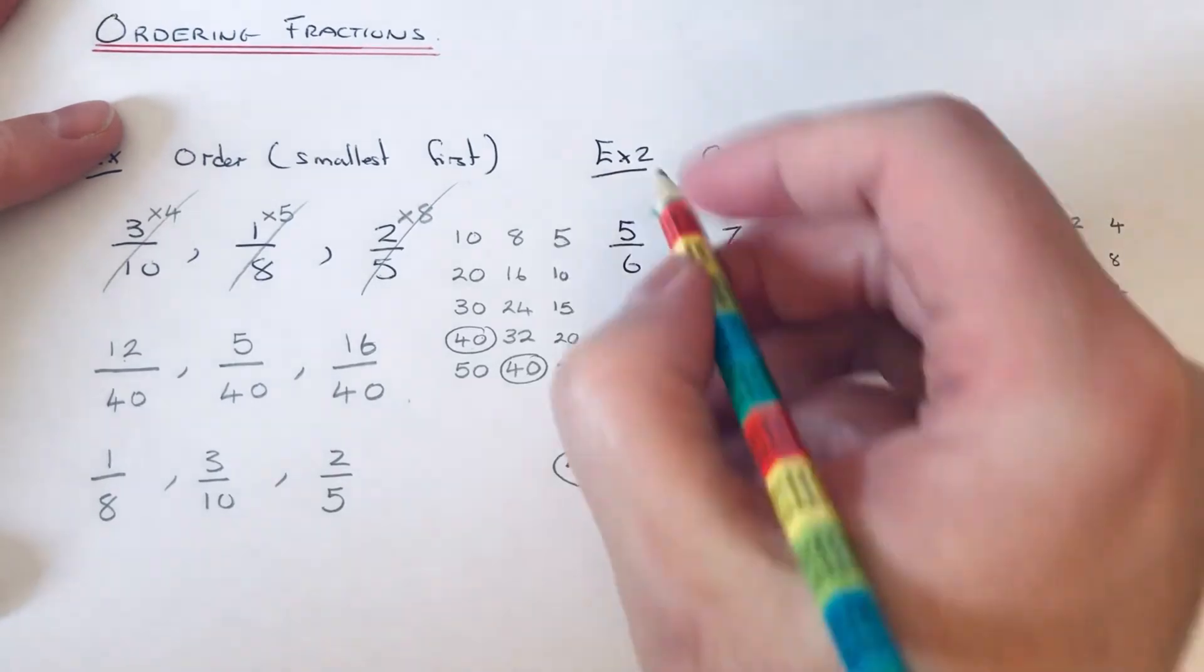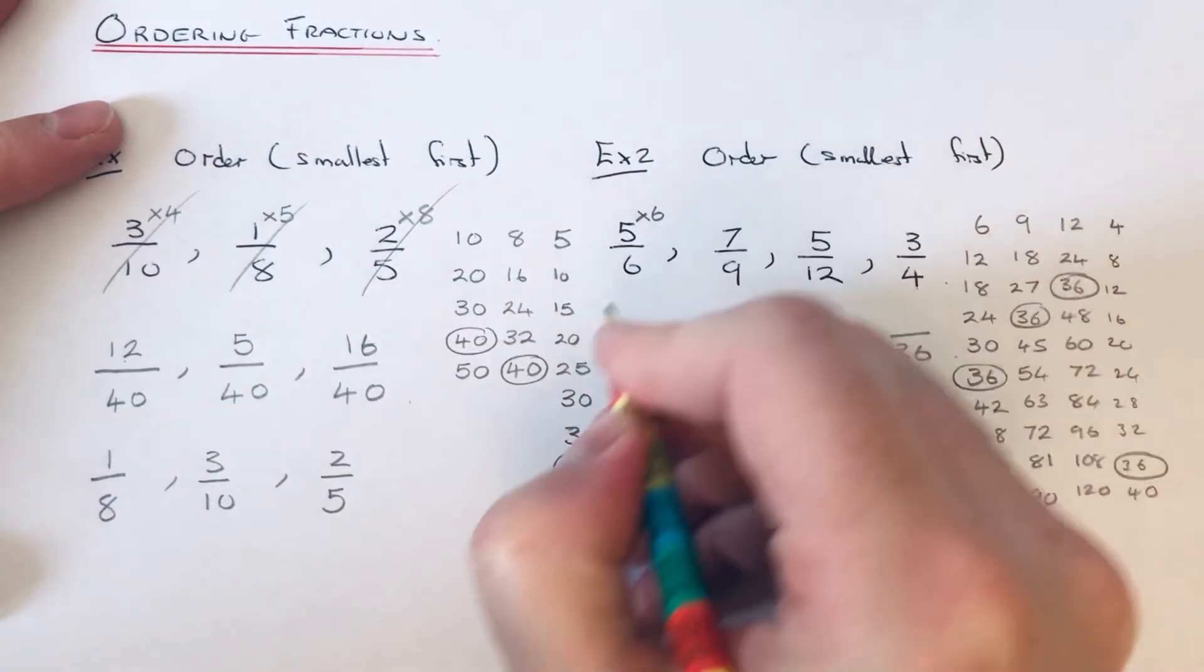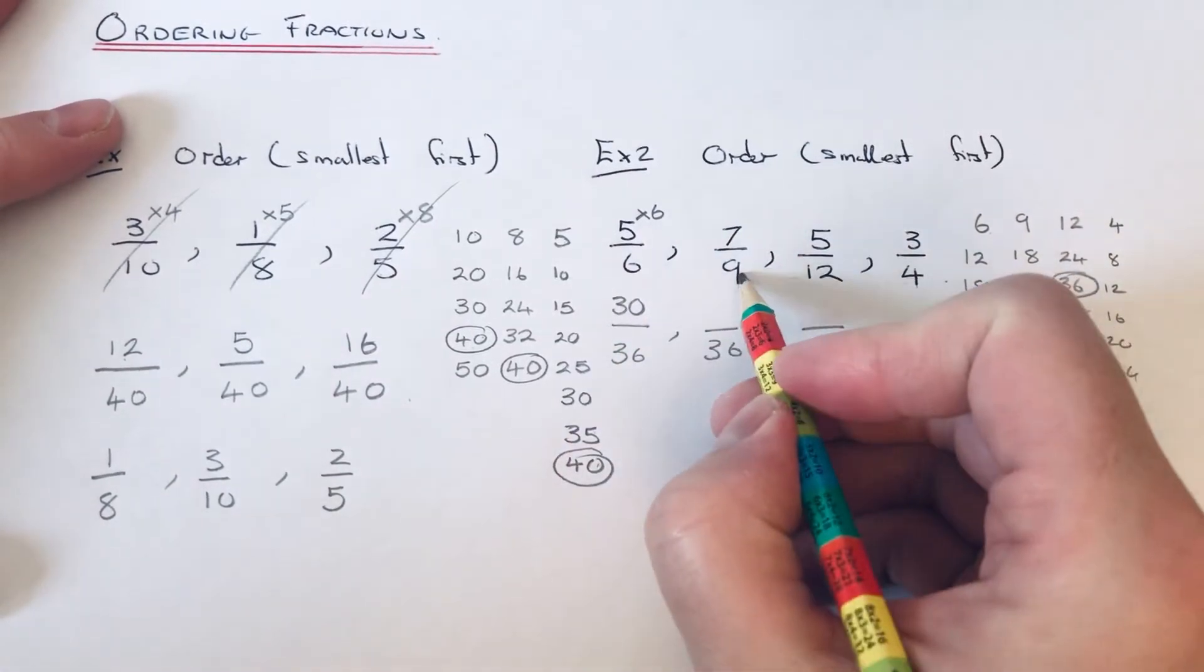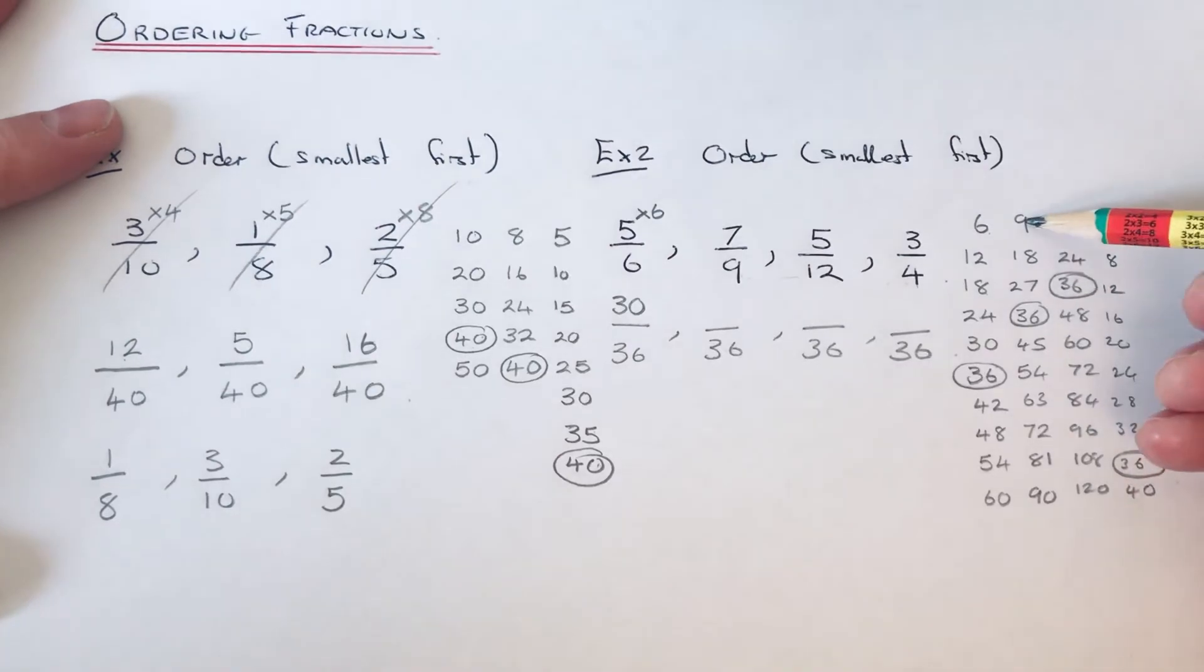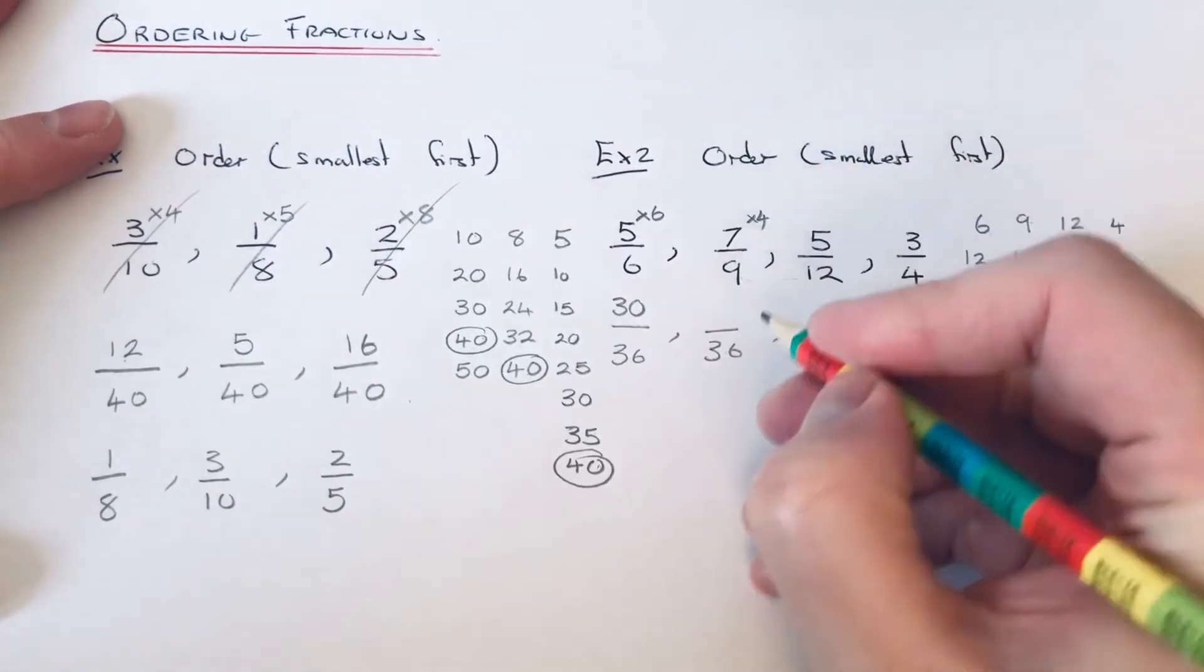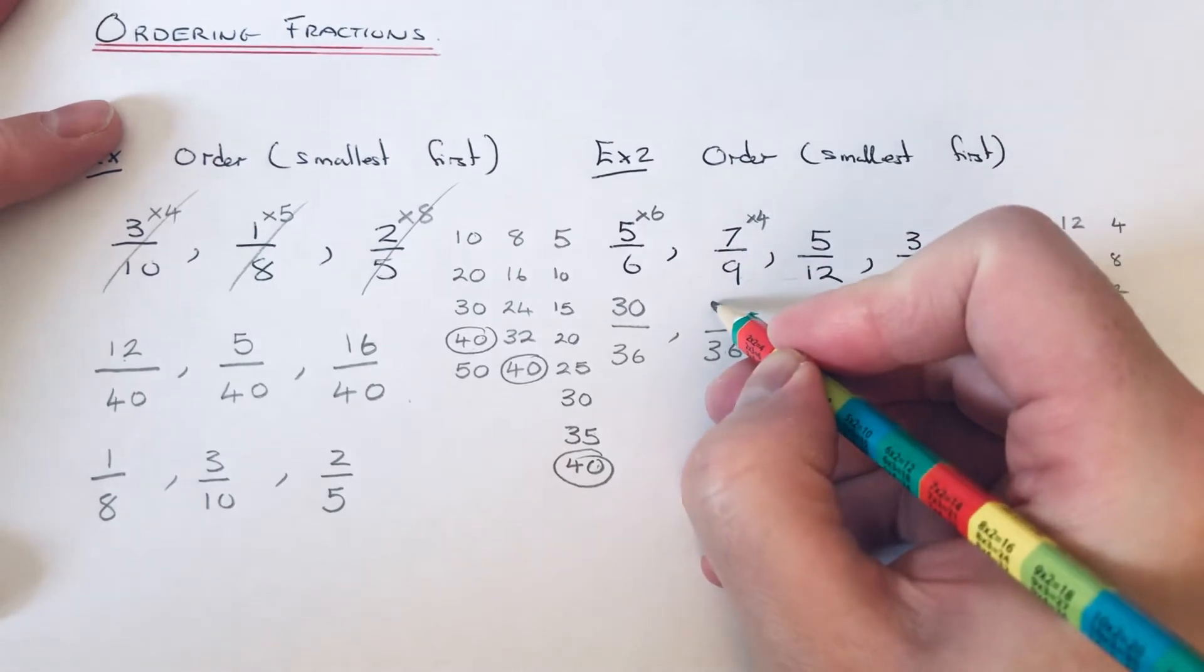So we need to times the first fraction by 6. 5 times 6 is 30. How many times did 9 go into 36? 1, 2, 3, 4. So this one we need to multiply by 4. 7 times 4 is 28.